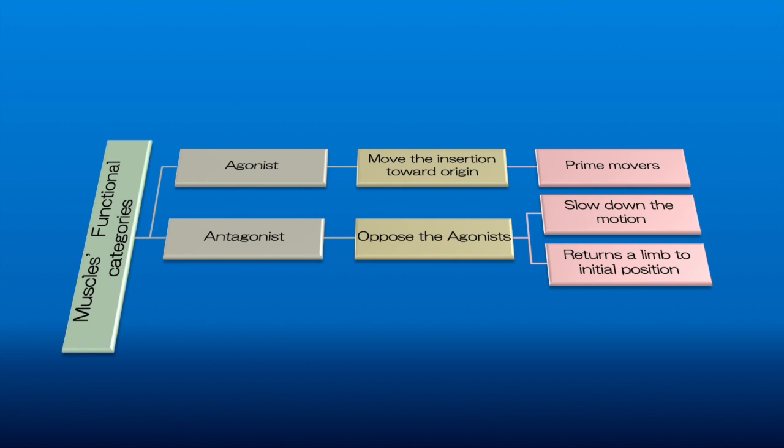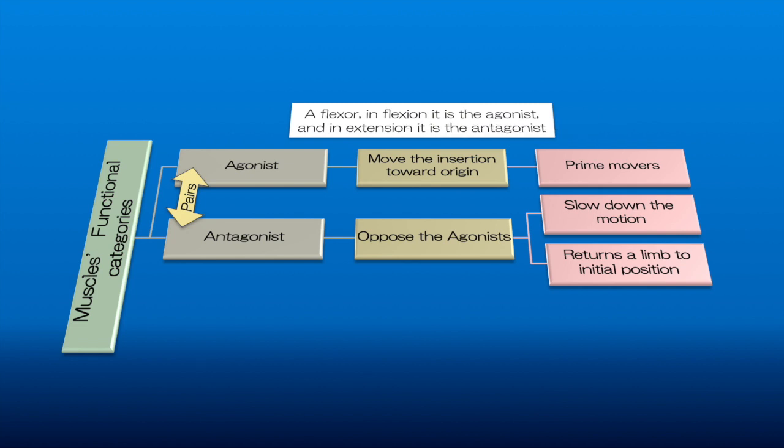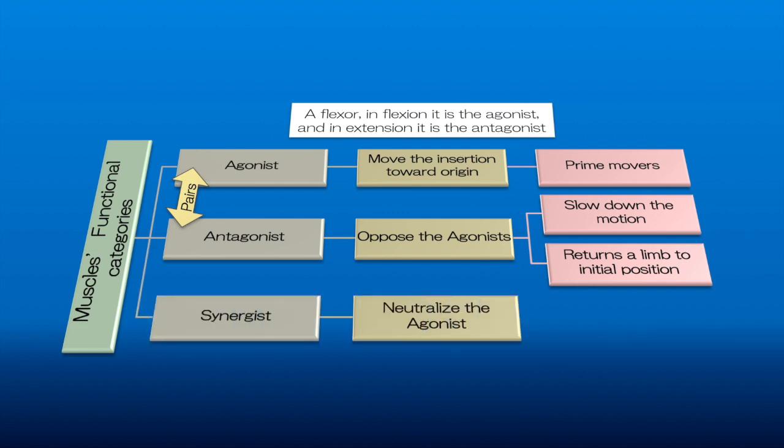Agonist and antagonist muscles are paired, so if you have a flexor in flexion, it's an agonist, and in extension it's an antagonist, so they can change roles. Another group of muscles known as synergists neutralize agonists and also support the joint from dislocation.